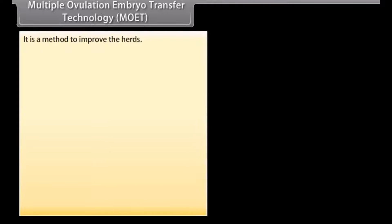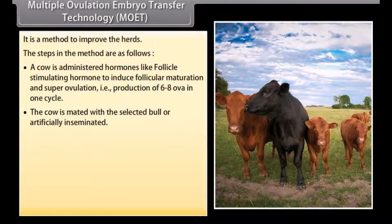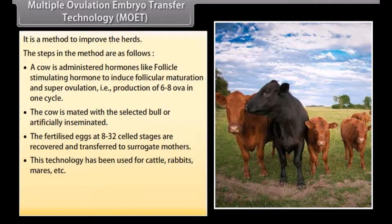Multiple ovulation embryo transfer (MOET) technology is a method to improve the herds. A cow is administered hormones like follicle-stimulating hormone to induce follicular maturation and super ovulation, that is, production of 6 to 8 ova in one cycle. The cow is mated with the selected bull or artificially inseminated. The fertilized eggs at 8 to 32 cell stages are recovered and transferred to surrogate mothers.